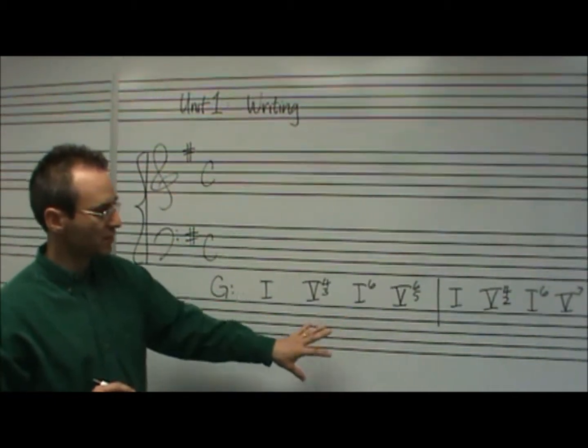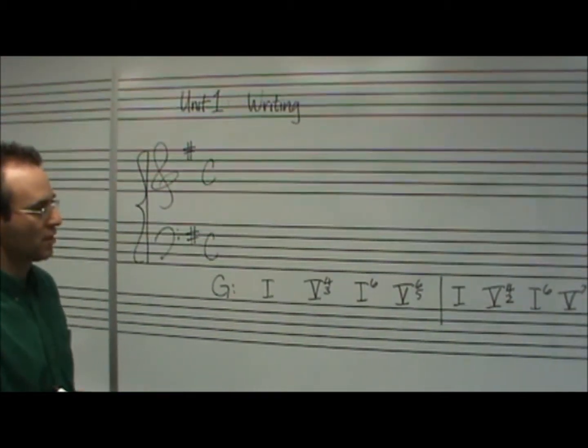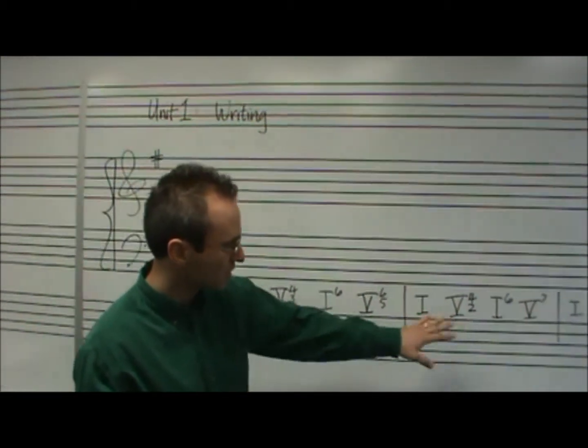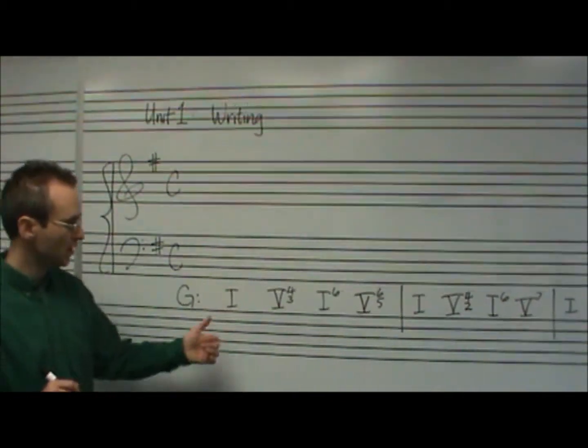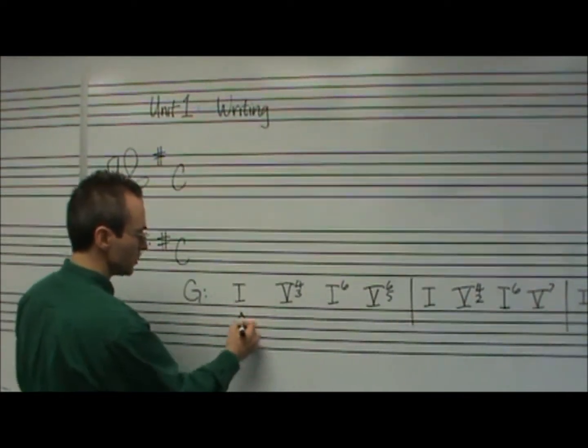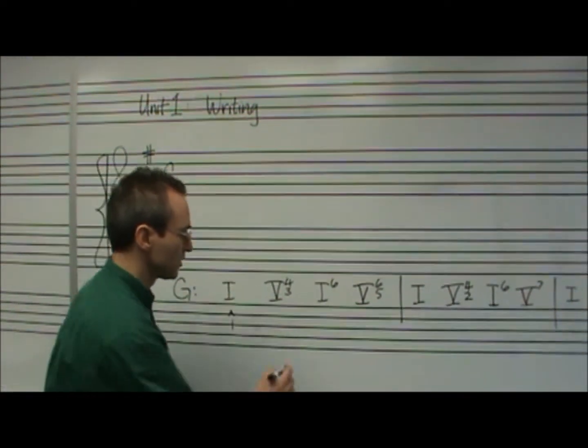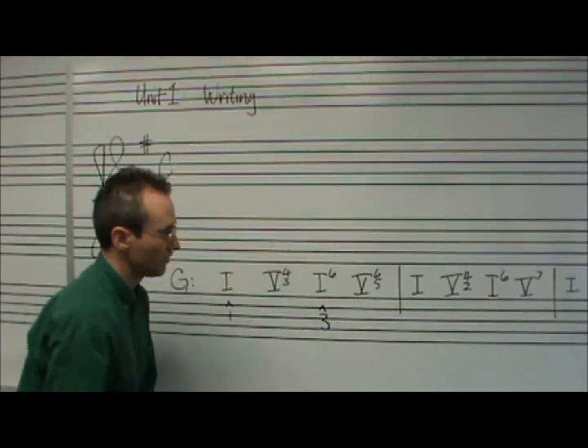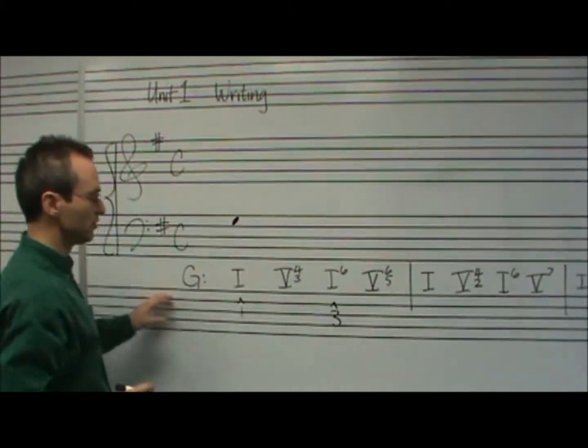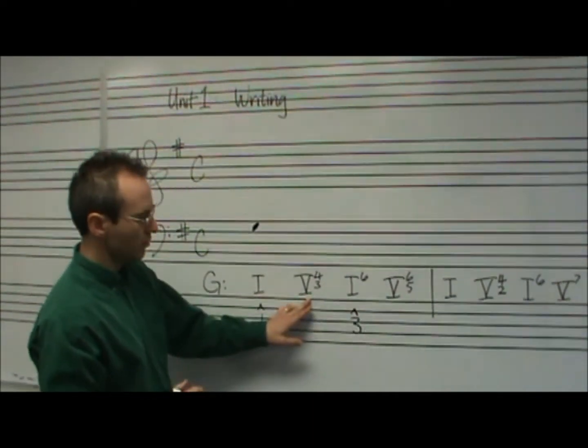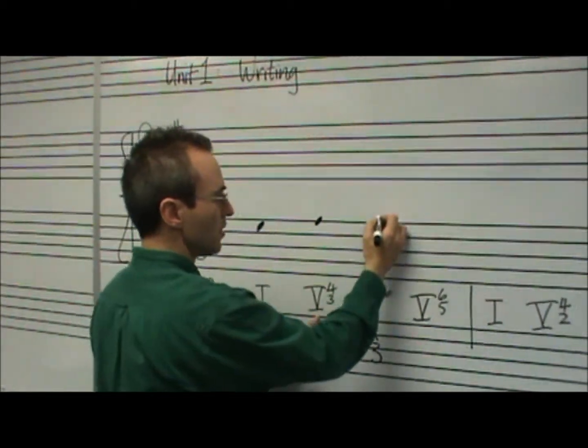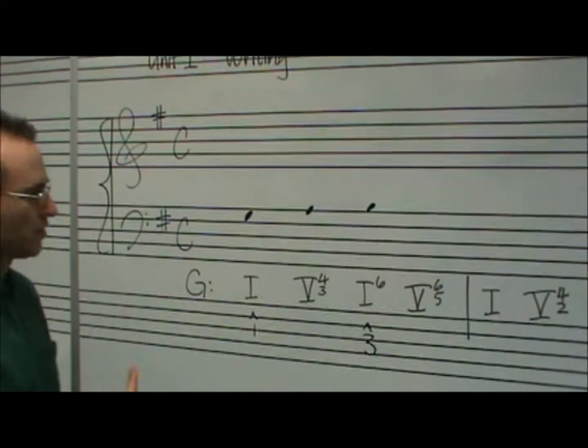We've already talked about dominant sevenths and their inversions, what scale degree goes in the bass for each one. We also need to know about these two chords, ones and one sixes, because that's the other thing going on in here. Those are very quick and easy. If you've got a Roman numeral one, you've got scale degree one as your bass note. With one six, that's first inversion, that means we're going to have scale degree three in the bass. So, let's just sketch out some notes here.